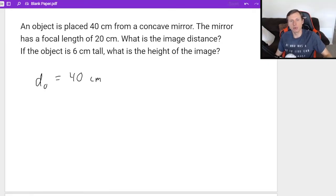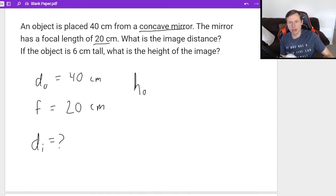They tell us the focal length is 20. So F equals 20. I also want to note it is positive 20 because it's a concave mirror. If that said convex, I would have had to write negative 20 for the focal length. I want to solve for DI first. And then after I do that, the height of the object is 6 centimeters. And I also want to find the height of the image as well.